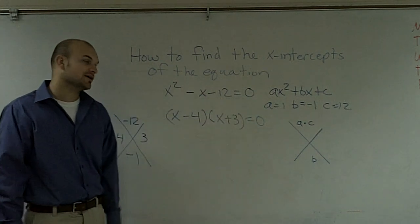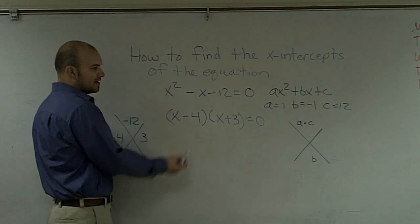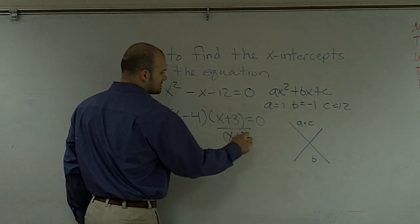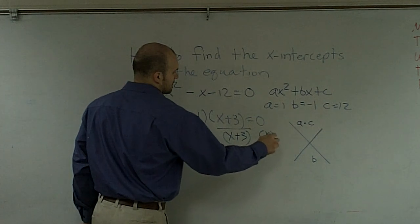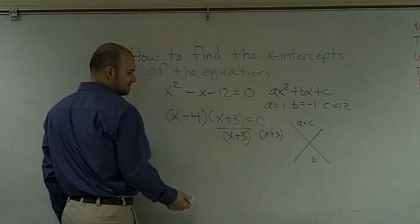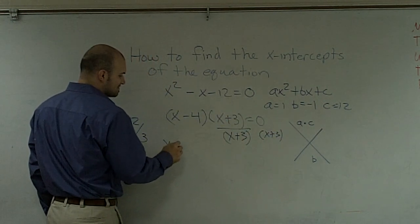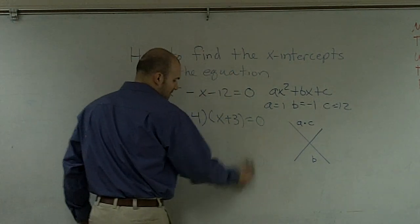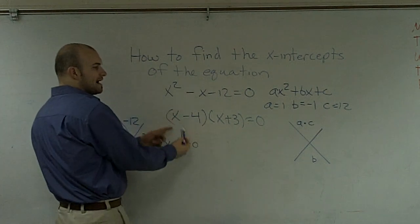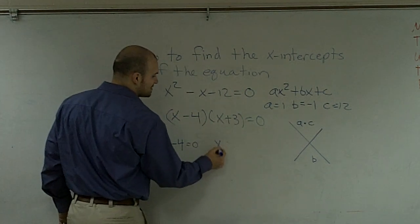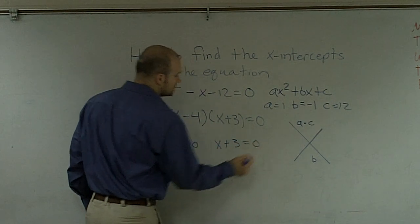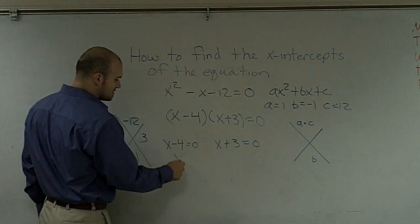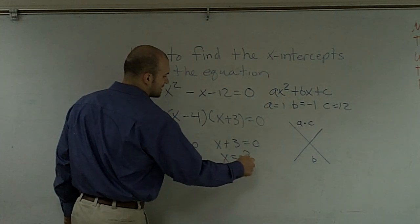Now, to find out what the x values are, we apply the zero product property. So x minus 4 equals 0, and x plus 3 equals 0. This is also what we call the zero product property. Solving each: x equals 4, and x equals negative 3.